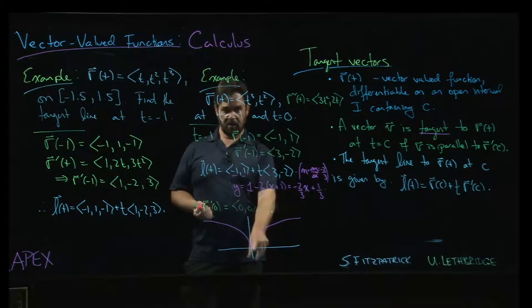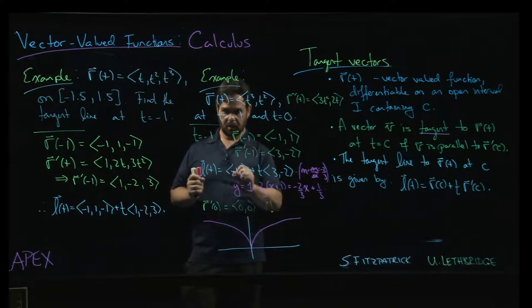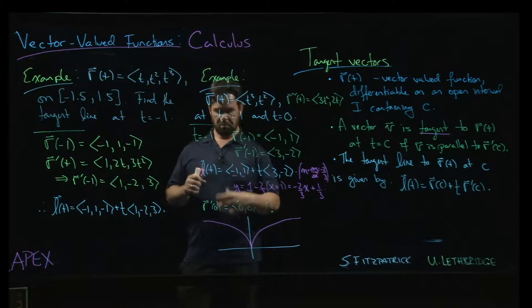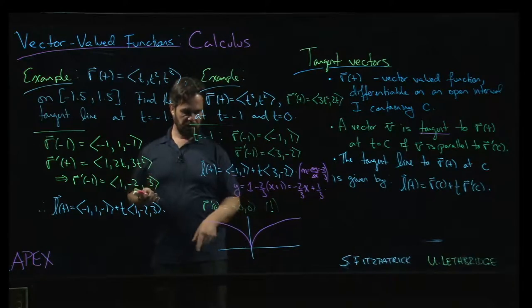because the graph, right, looks something like that. The curve is continuous at the origin, but there's a cusp, right? So the curve is not smooth, if you like, at that point. There's kind of a corner to the curve.